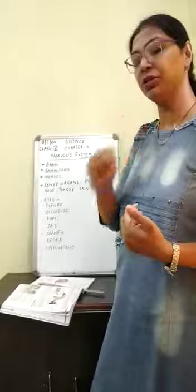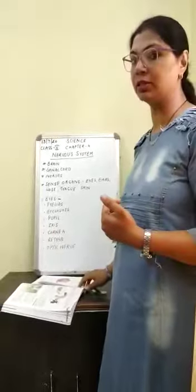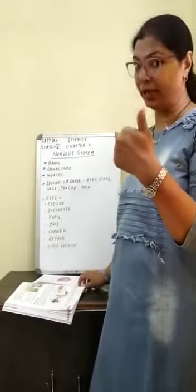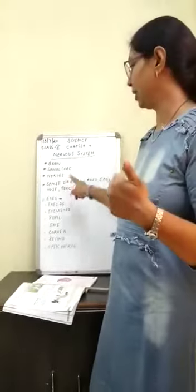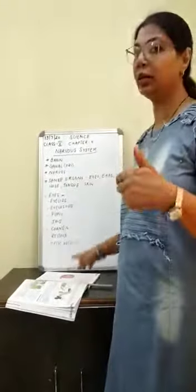Now there are three constituents of the nervous system: brain, spinal cord, and nerves.